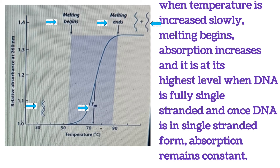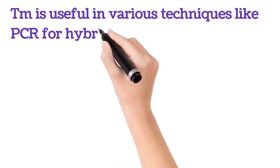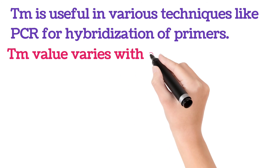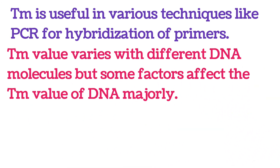Observe from this curve: as DNA is melting, absorption of UV rays is also increasing. Absorption is maximum when DNA has completely become single-stranded. After that point there is no further increase in absorption, because absorption only increases as long as there are new single strands forming. Once all double-stranded DNA has become single-stranded, absorption is constant. The Tm value is very useful in various techniques like PCR for hybridization of primers.